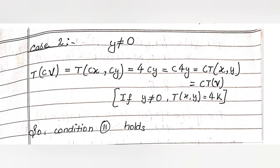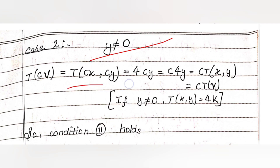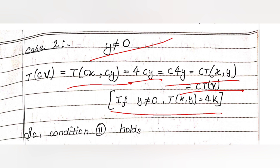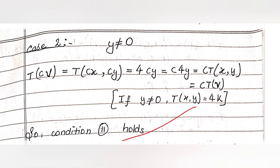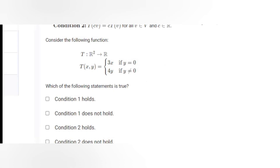Case 2: y ≠ 0. T(cv) = T(cx, cy) = 4cy = c·4y = c·T(x, y) = c·T(v). So in both cases — y = 0 and y ≠ 0 — Condition 2 holds. Therefore, Condition 2 is satisfied by T.